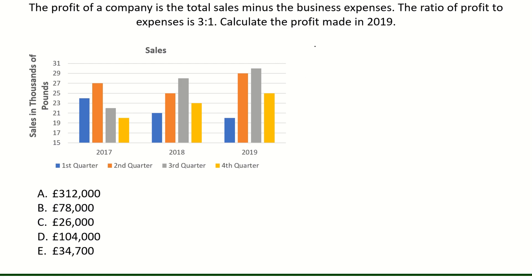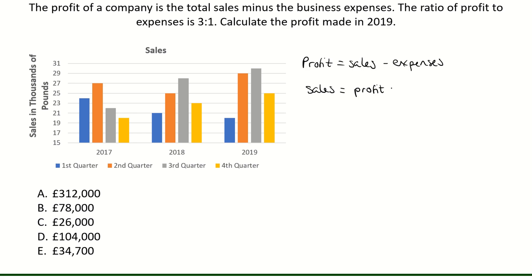So if we go back to the question, it says the profit of a company is the total sales minus the business expenses, which we can write as this equation here. Now we have the sales, so if we rearrange this equation, we can say that sales equals the profit plus the expenses.